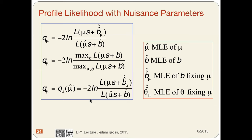The profile likelihood test statistic is defined as q = −2 log λ(mu) = −2 log[L(mu, theta-double-hat) / L(mu-hat, theta-hat)]. All these different notations are equivalent — it's just different ways to write the same thing. The key point is: scanning B while fixing S in the numerator, and scanning both mu and B in the denominator.